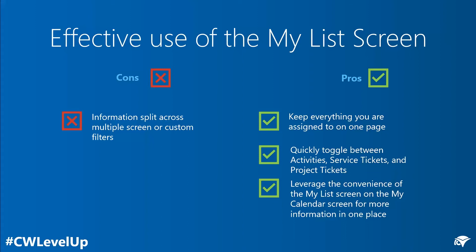Using the MyList screen keeps everything on one page and allows you to quickly toggle between your tabs for service, activities, projects, and more. You can leverage the power of the MyList screen on the MyCalendar screen to further help keep on top of any follow-ups that you may have.